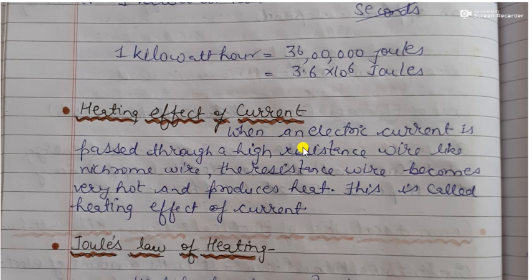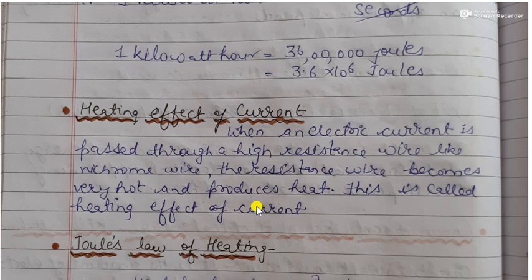Heating effect of electric current: whenever electric current is passed through a high resistance wire like a nichrome wire, the wire becomes very hot and heat is produced. This effect is known as the heating effect of electric current. We see in our day-to-day life many electrical appliances like electric iron, electric toaster, and electric rod — whenever current is passed through these appliances, they become hot.